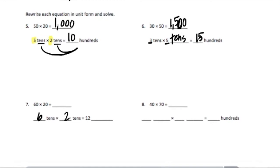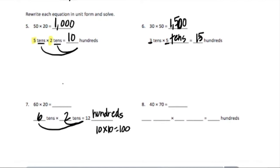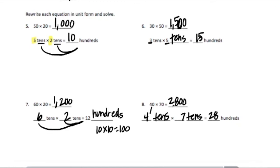Next up we have sixty times twenty. Sixty is six tens, twenty is two tens. Six times two is how they're getting this twelve — twelve hundreds, because ten times ten equals one hundred. Sixty times twenty equals twelve hundreds, or one thousand two hundred. For forty times seventy: forty is four tens, seventy is seven tens. Four times seven is twenty-eight, ten times ten is one hundred, so that would be twenty-eight hundreds, or two thousand eight hundred.